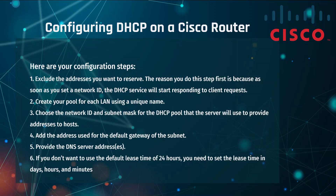Step two: create your pool for each local area network using a unique name, such as Sales Department or HR Department. Step three: choose the network ID and the subnet mask for the DHCP pool. Step four: add the address used for the default gateway for the subnet — if you're using a router, it will be that router's IP address.